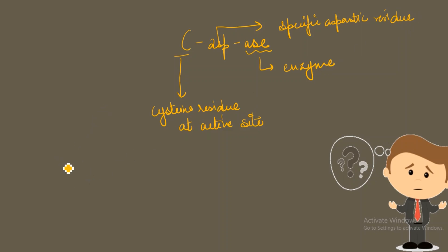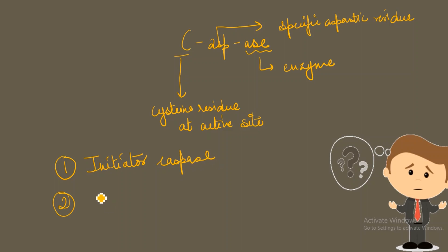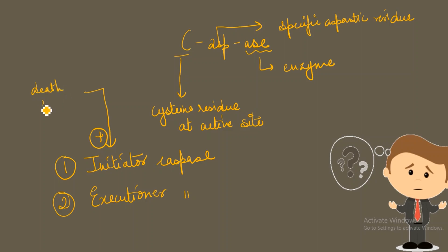Caspases are basically divided into two classes. One class is called the initiator caspase and the other is called the executioner caspase. When a death signal arrives, it causes the activation of the initiator caspase, which has only one function: to cause the activation of the executioner caspase, which will finally cause the death of the cell.